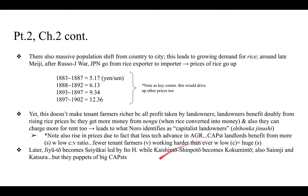Later the Jiutou became the Seiyukai led by Ito Hirobumi, while the Kaishinto and Shinpoto became the Kokuminto. Saionji Kinmochi, Katsura, and others were important political figures, but Noro says they were basically puppets of the big capitalists.